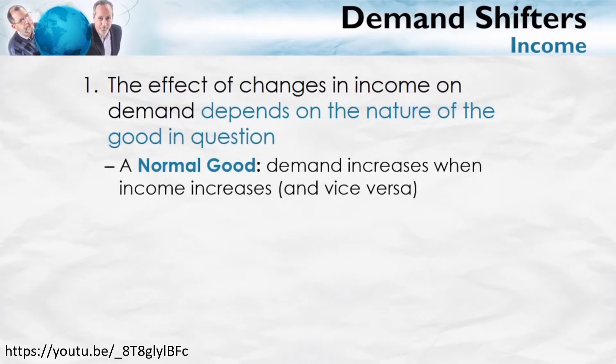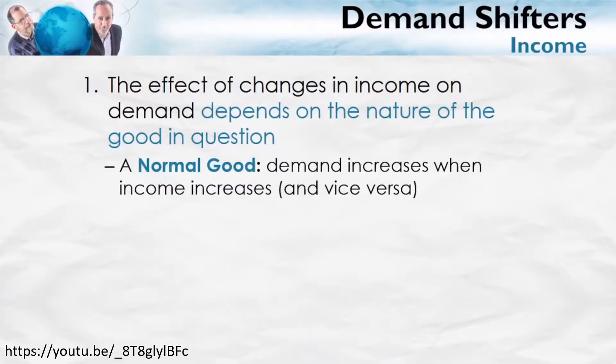Let's look in more detail at demand shifters, beginning with income. The effect of changes in income on demand depends on the nature of the good. For most goods, when your income goes up, you demand more of that good. Imagine you're a poor student who graduates and gets a high-paying job — when your income goes up, you're probably going to demand more automobiles, more housing, and more fine dining. These are all called normal goods because demand for them goes up when incomes go up.